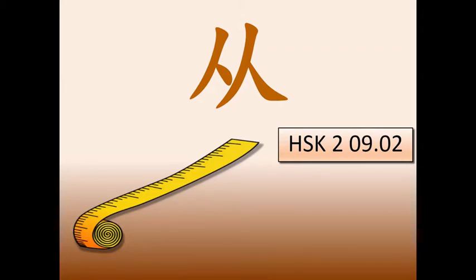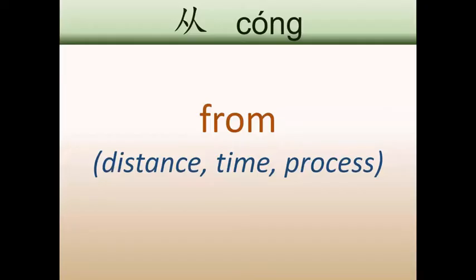We are going to talk about the preposition 从 (cóng). We use this preposition to express the meaning FROM when we are talking about distance in space, distance in time, or a process — for example, to reach a goal. Up to my goal, there is still a distance. In this kind of context, we are going to use 从.